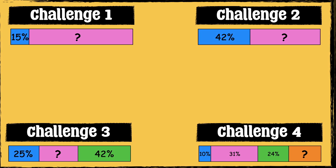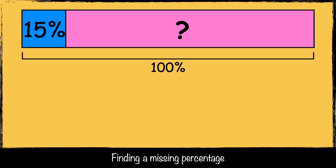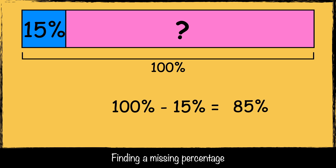Here's the first challenge: 15% of this shape is blue, but what percentage of the shape is pink? We start by noting that the whole shape is 100%. To find the missing percentage, we subtract 15 from 100. A hundred take away 15 is 85, so the missing percentage in this challenge is 85%.